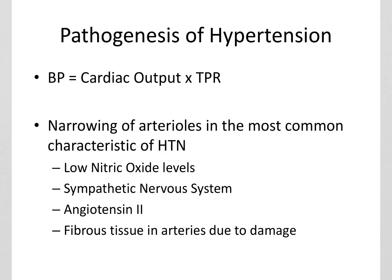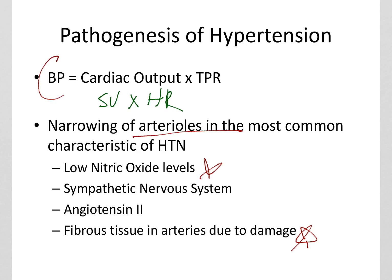Blood pressure is affected by cardiac output, and cardiac output equals stroke volume times heart rate, times total peripheral resistance. Think about that equation and what factors would change it to cause blood pressure to go up. Typically it's the narrowing of the arterioles — it can be nitric oxide levels, or buildup in the arteries causing narrowing, which causes pressure and blood pressure to rise.